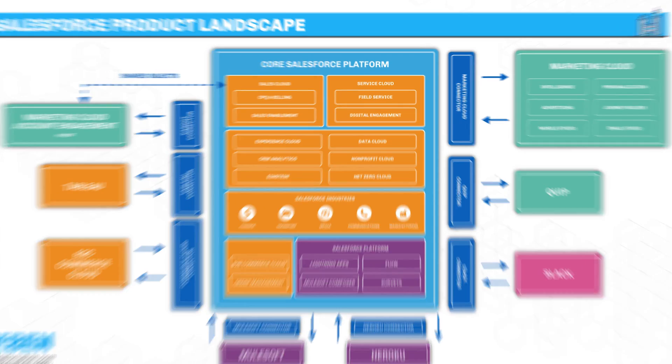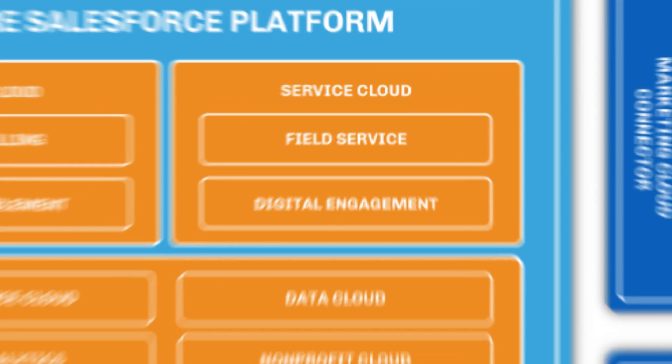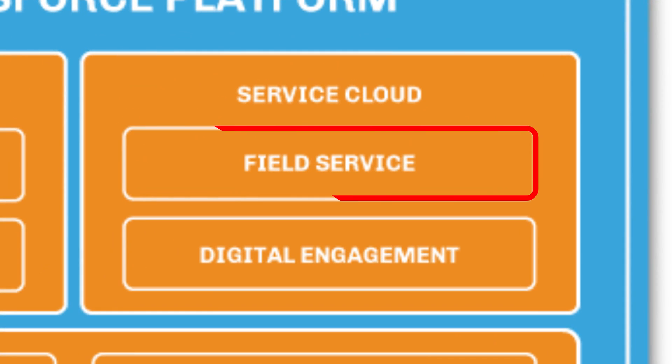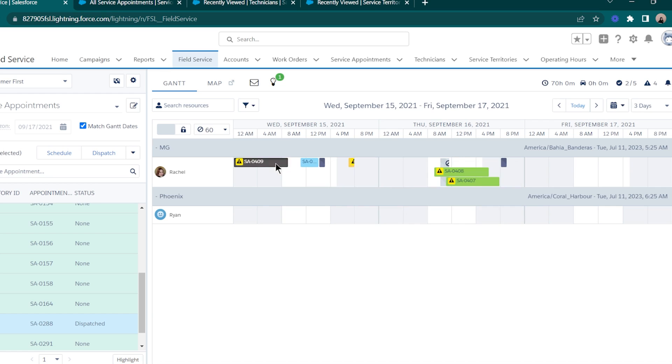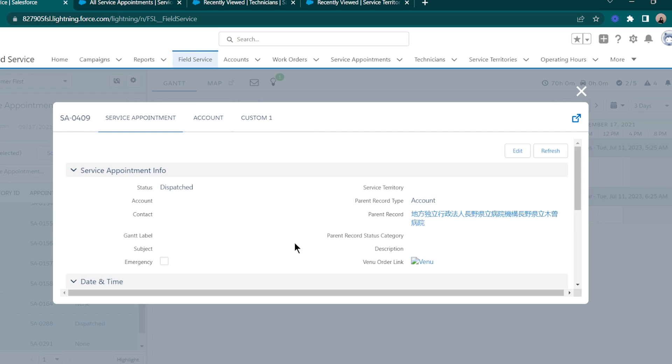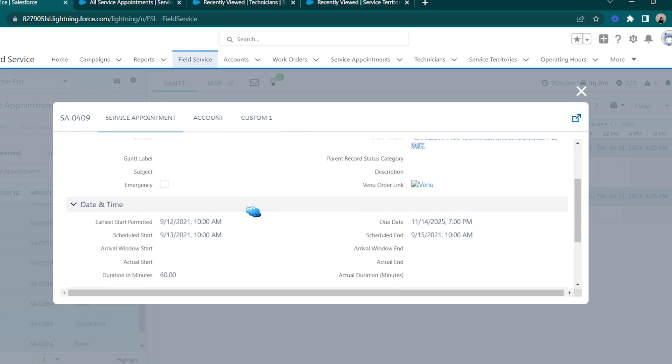If your team contains field agents who are delivering items, fixing machinery, or installing products such as internet landline, Field Service can support in dispatching, planning routes, scheduling appointments, and showing all relevant information via a mobile application.